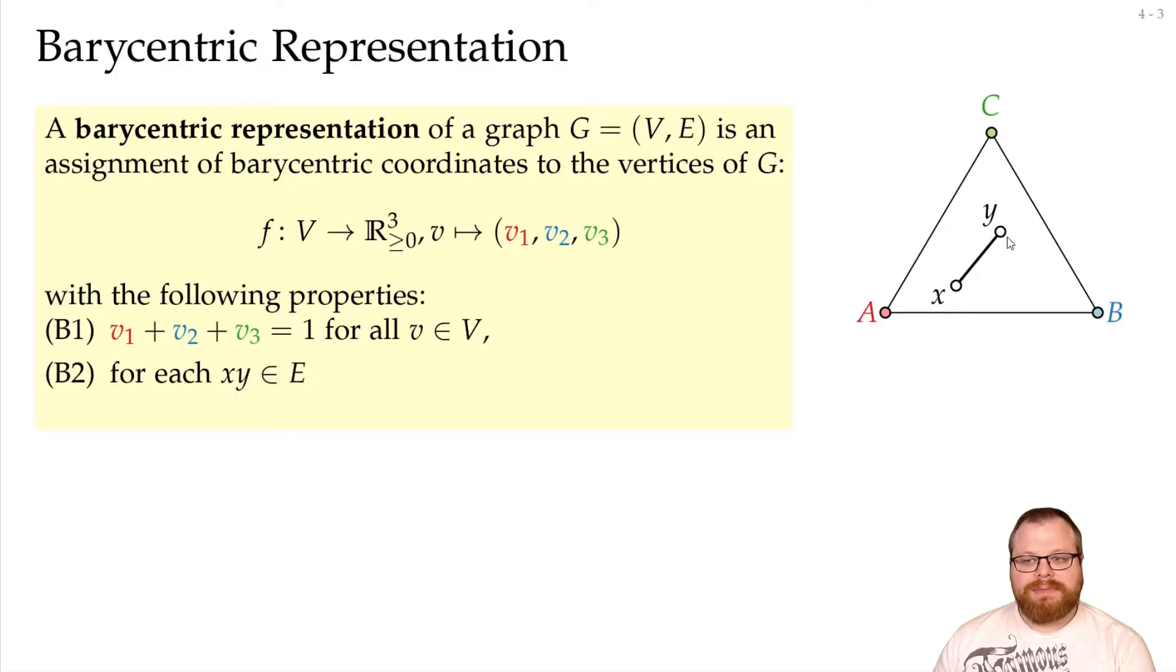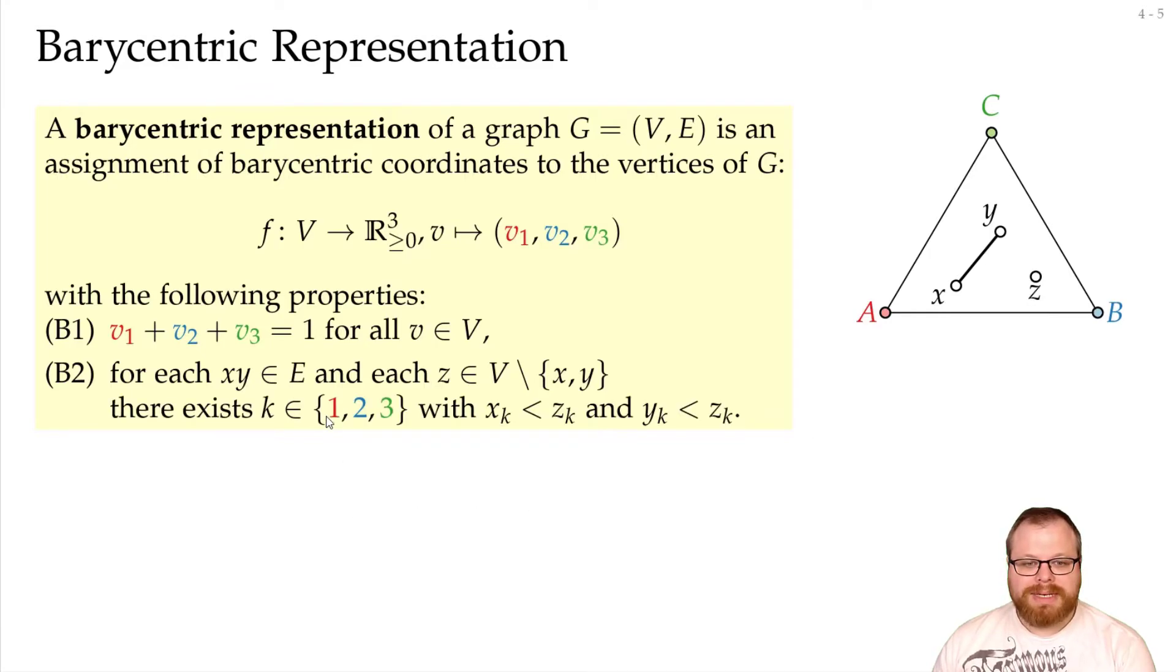So let's say we have some edge x, y, and we have any other vertex z. We now want to make sure that z is closer to a, or to b, or to c than both of these vertices. So we want there to be some index 1, 2, or 3, such that z_k is larger than both x_k and y_k.